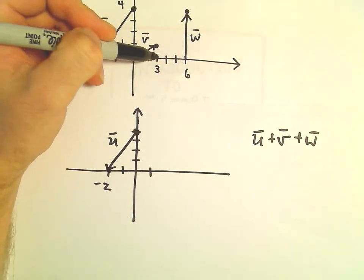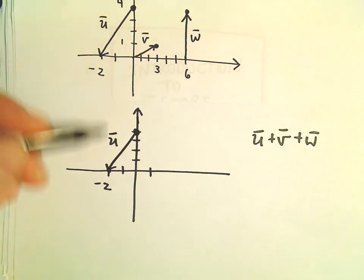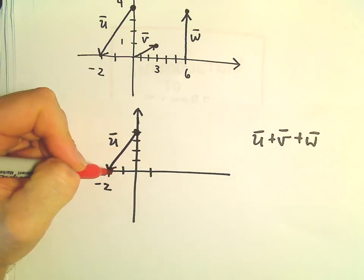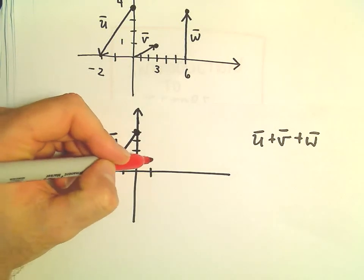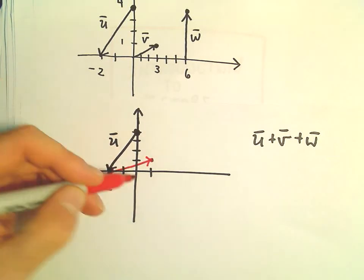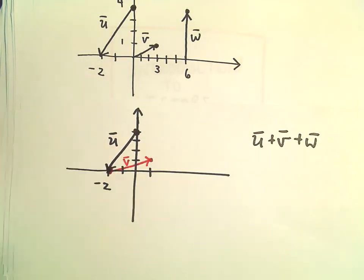That vector goes 3 units to the right and 1 unit up. So we're sitting at -2. That means if I go 3 units to the right and 1 unit up, I'm going to stop at the point (1,1). So there's vector v.